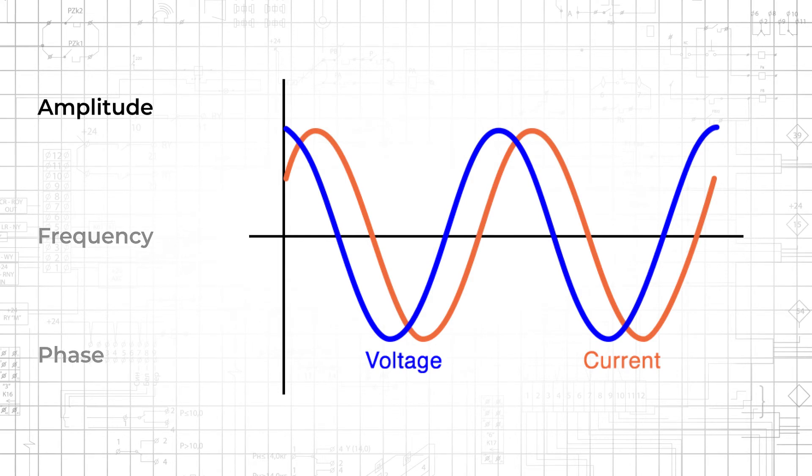Amplitude specifies the maximum distance between the horizontal axis and the vertical position of the waveform. For example, a 5 volt sine wave varies between plus 5 volts and minus 5 volts.